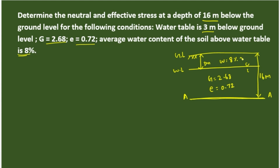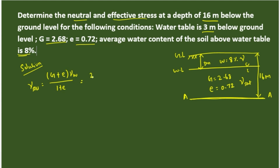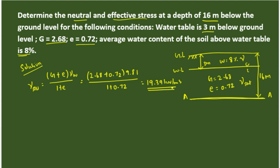First, we have to find the gamma value above the water table and the gamma saturation value below it. The formula for gamma saturation is: gamma_sat = (G + E) × gamma_w / (1 + E). Substituting: G = 2.68, E = 0.72, gamma_w = 9.81, divided by (1 + 0.72). Solving this, we get gamma saturation equals 19.39 kN/m³. This is the unit weight below the water table.